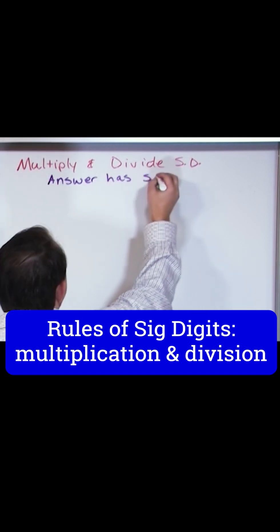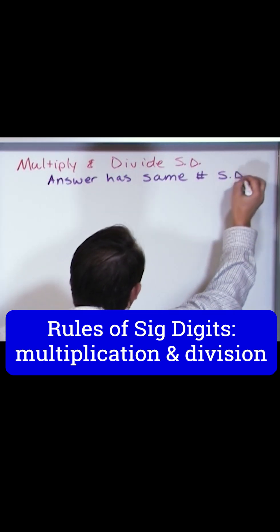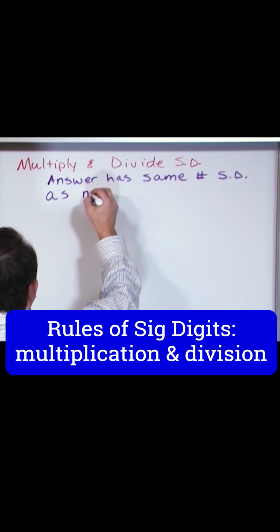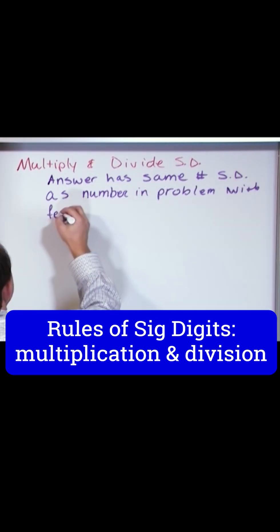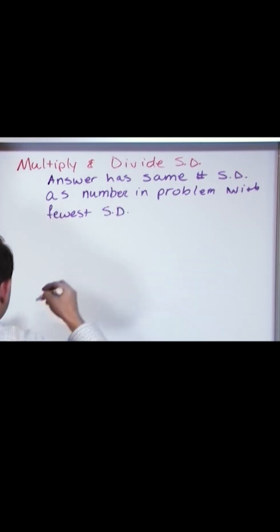The answer has the same number of significant digits as the number in your problem with fewest significant digits. That's a lot of words.